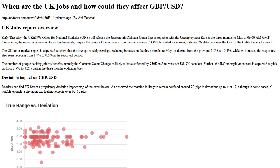How could they affect GBPUSD? GBPUSD defies Wednesday's upbeat performance while flashing a 0.23% loss to 1.2560 during the pre-London Open on Thursday. The pair cheered welcome UK GDP data and broad US dollar weakness the previous day.